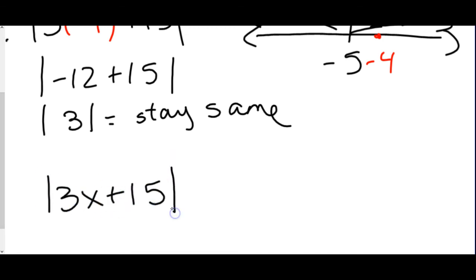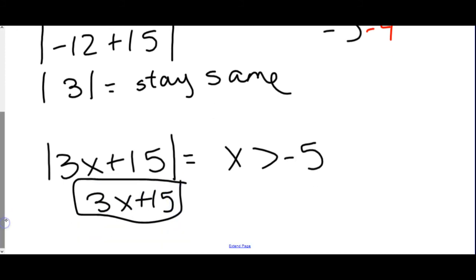Square root of 3x plus 15. Not square root. I apologize. Absolute value of 3x plus 15. When x is greater than negative 5, it will stay the same. So this expression simplified is 3x plus 15. Again, that only works for numbers greater than negative 5. It might change if I looked at the other side. If I looked at numbers less than negative 5.